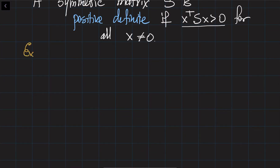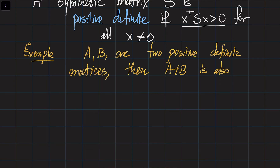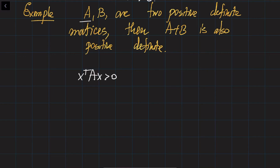Let's do an example. If A and B are two positive-definite matrices, then the sum A plus B is also positive-definite. To prove this using the definition: A being positive-definite means X-transpose A X is positive for any vector X. Note that this is a scalar — multiplying a row vector by a matrix gives a vector, and that vector times a column vector gives a scalar. Similarly, X-transpose B X is also positive for all vectors X.